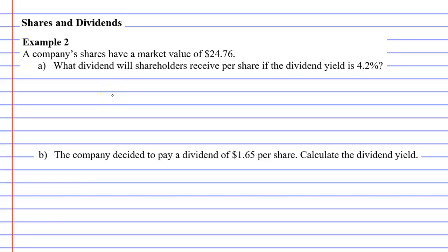In this video, I'm going to complete example two. A company's shares have a market value of $24.76. We're going to complete question A, which says: what dividend will shareholders receive per share if the dividend yield is 4.2%?